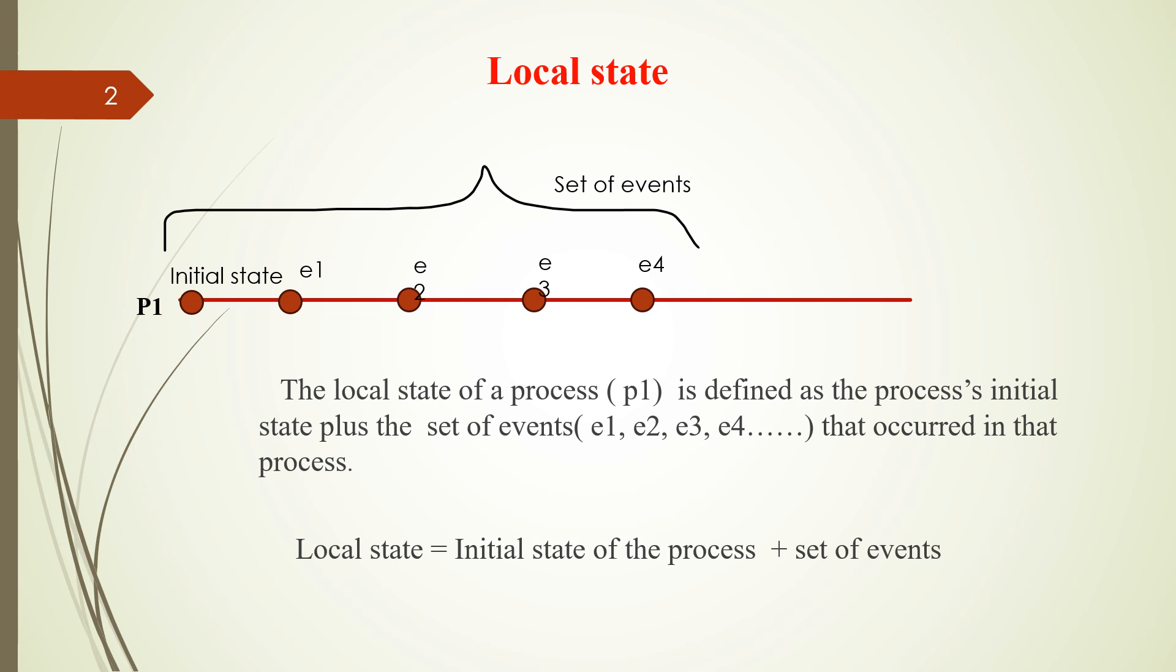So what is local state? Local state equals the initial state of the process plus the set of events occurred in that process. For example, in this state, the events are E1, E2, E3, E4, the events occurred in the process P1. So local state is the initial state plus the set of events.